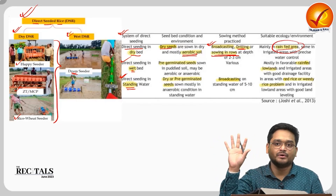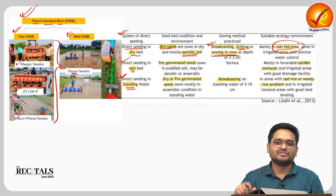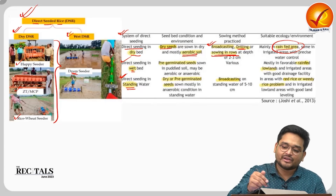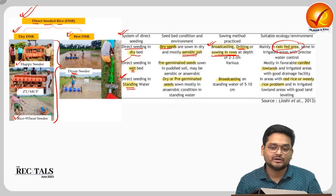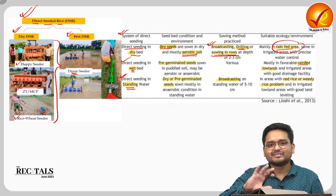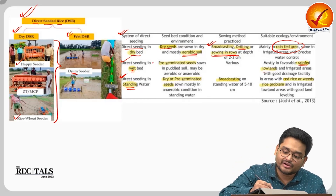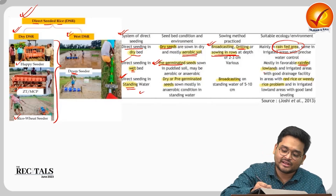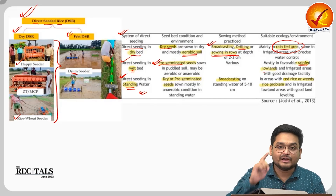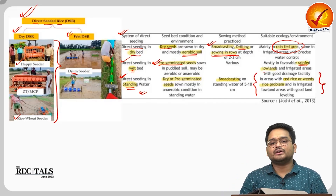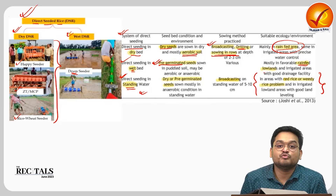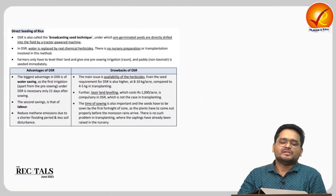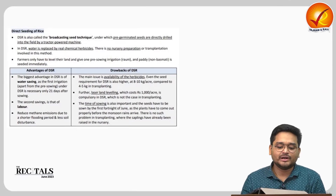Dry bed seeding works well in rain-fed areas with proper rainfall during monsoon season, such as eastern Uttar Pradesh and West Bengal. Under the wet bed method, pre-germinated seeds are used, similar to nurseries. Direct seeding in standing water is a special type of DSR practiced in areas that have severe weed problems, where water cannot be avoided.